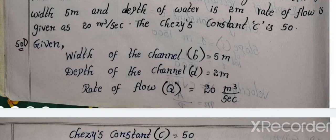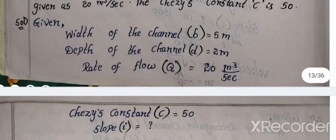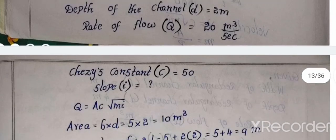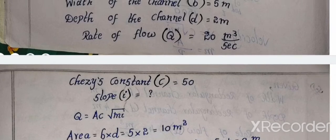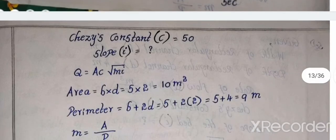C means Chezy's constant already, I said 50. So we find the slope of the bed of the rectangular channel, slope calculation. So first to give you the width of the channel B is 5 meters, depth of the channel D is 2 meters, rate of flow Q is 20 meter cube per second, Chezy's constant is 50.